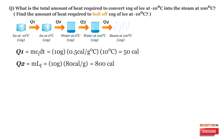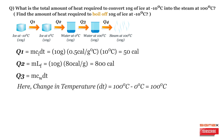Similarly, Q3 represents the temperature change of water from 0°C to 100°C, so Q3 = m × c_water × ΔT. The change in temperature ΔT equals the final temperature 100°C minus the initial temperature 0°C, which equals 100 degrees Celsius.